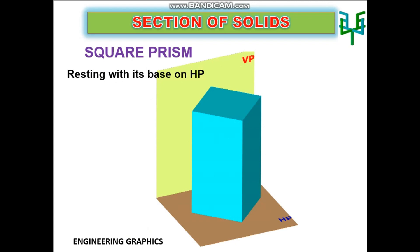Square prism is resting on the ground or HP with its base. Vertical faces are equally inclined to VP. The cutting plane or sectional plane is perpendicular to VP and inclined to HP.